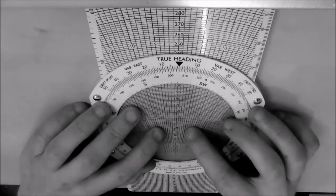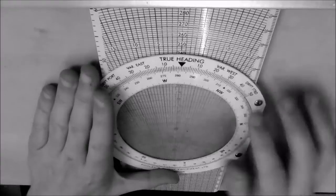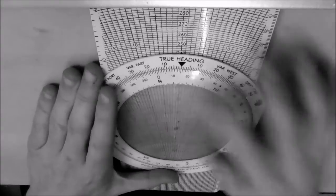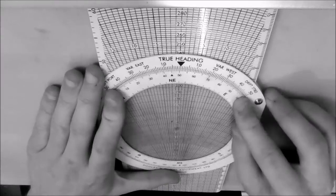OK, so the next thing we want to do now is rotate the wheel until we get 053 under the true heading which is stated there.